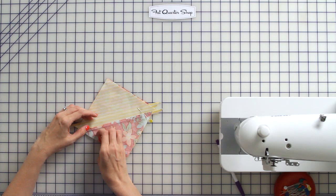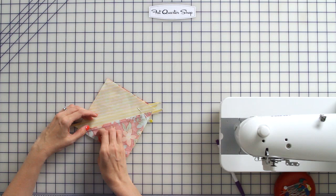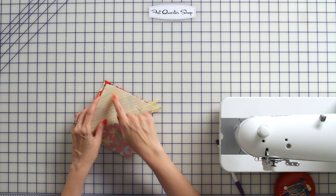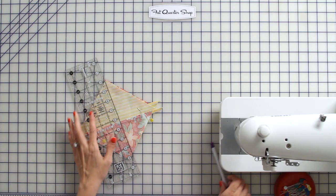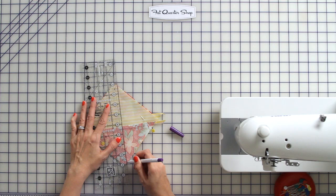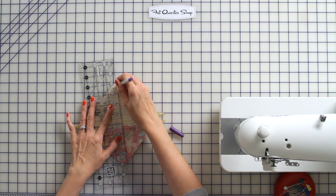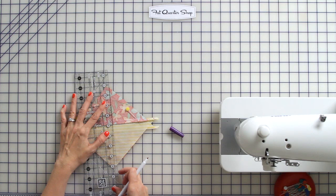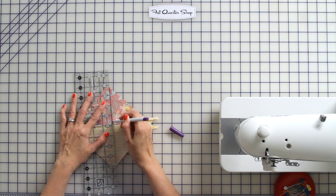And then we're going to draw a line just like we did before on the opposite seam. And then you'll just stitch directly on these two lines.